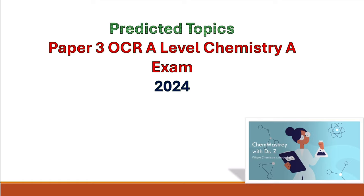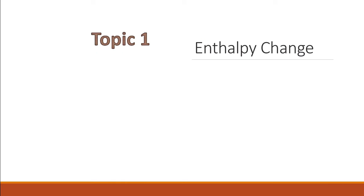Predicted topics for Paper 3 OCR A-level Chemistry A exam 2024. Out of all three papers of OCR Chemistry A, Paper 3 is the hardest to predict because it covers all the specification. However, this prediction is based on my analysis of previous exam papers over the last few years and knowledge of topics that didn't feature much in Paper 1 and Paper 2.